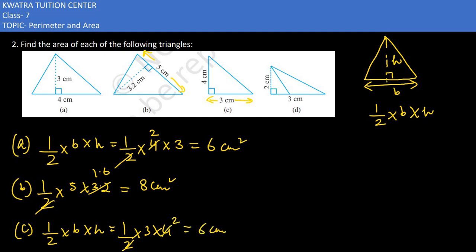Next question: we need to know the height of our base. This is not the height. What is our height? This is perpendicular to the base. Base is 3, half into base is 3, and then height is 2. 2 to 2 cancel, what will we have? 3 cm square.